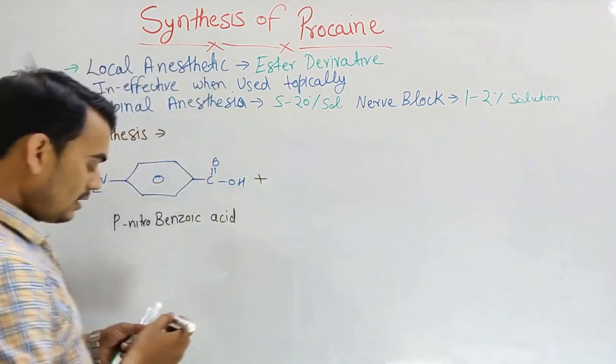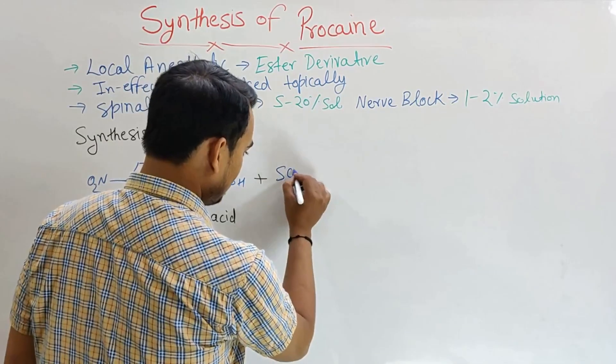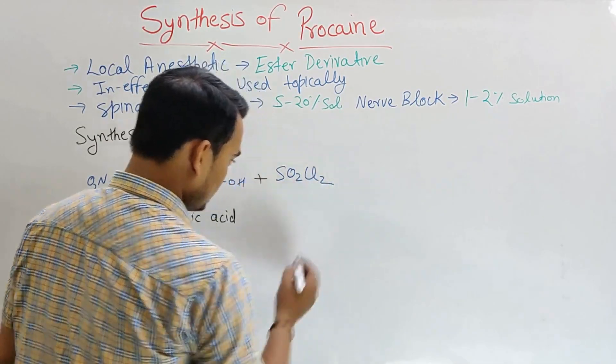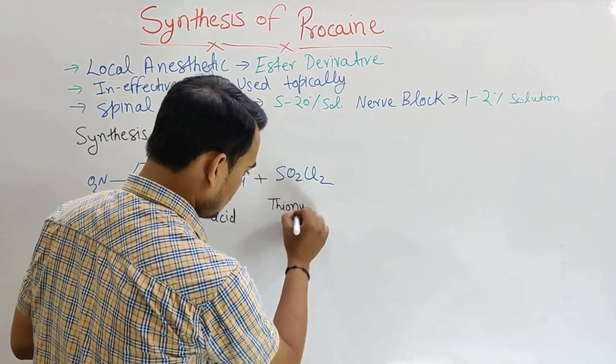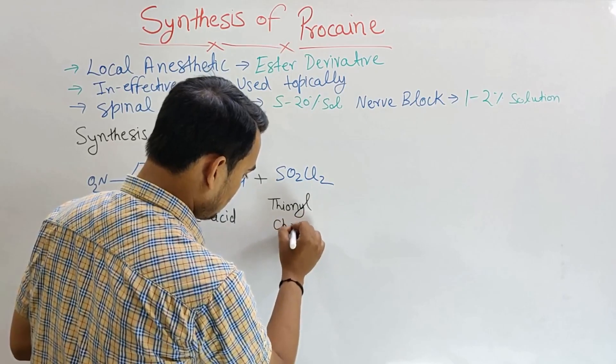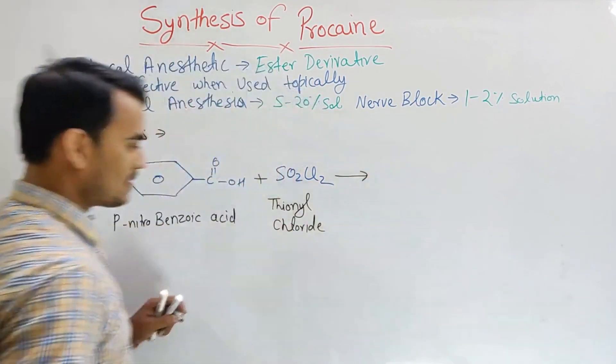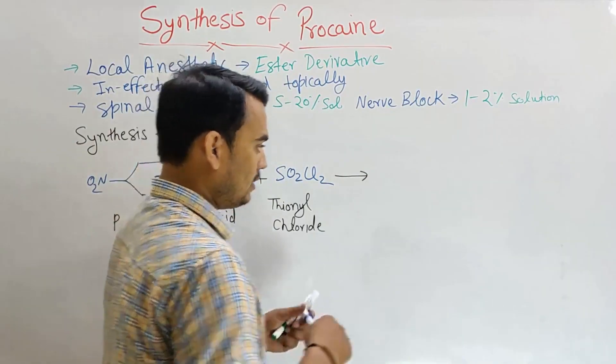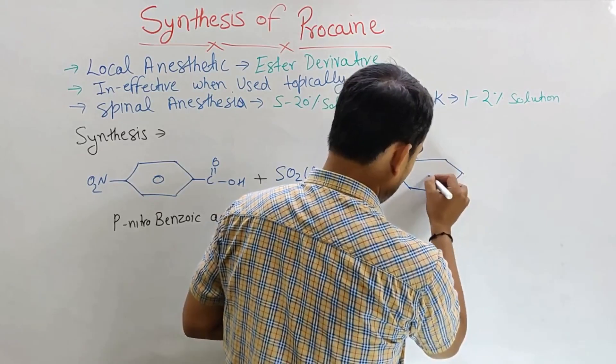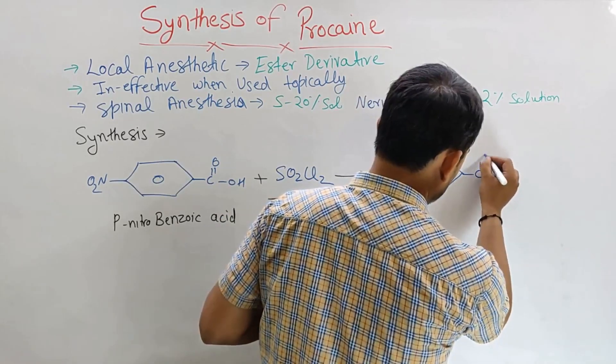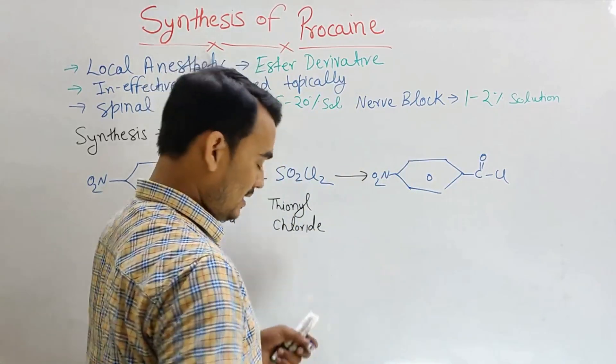This para-nitrobenzoic acid when reacted with thionyl chloride, that is SOCl2, forms a chloroacid with NO2 group.